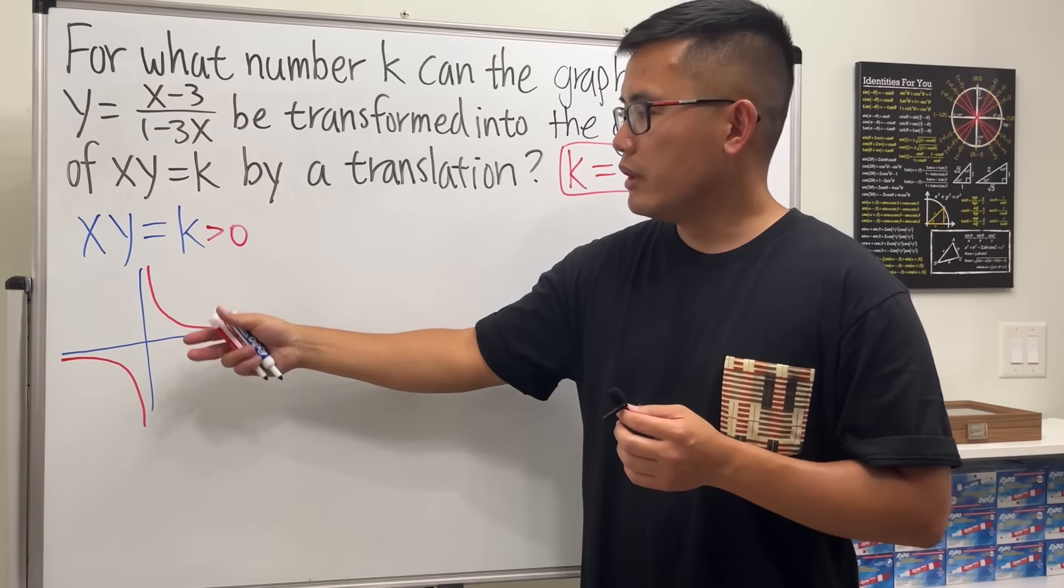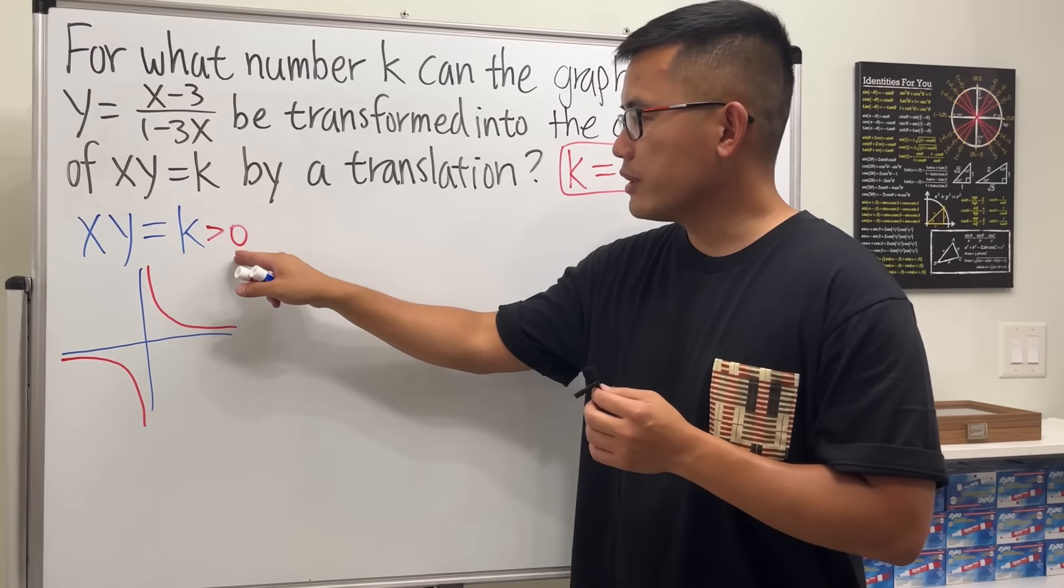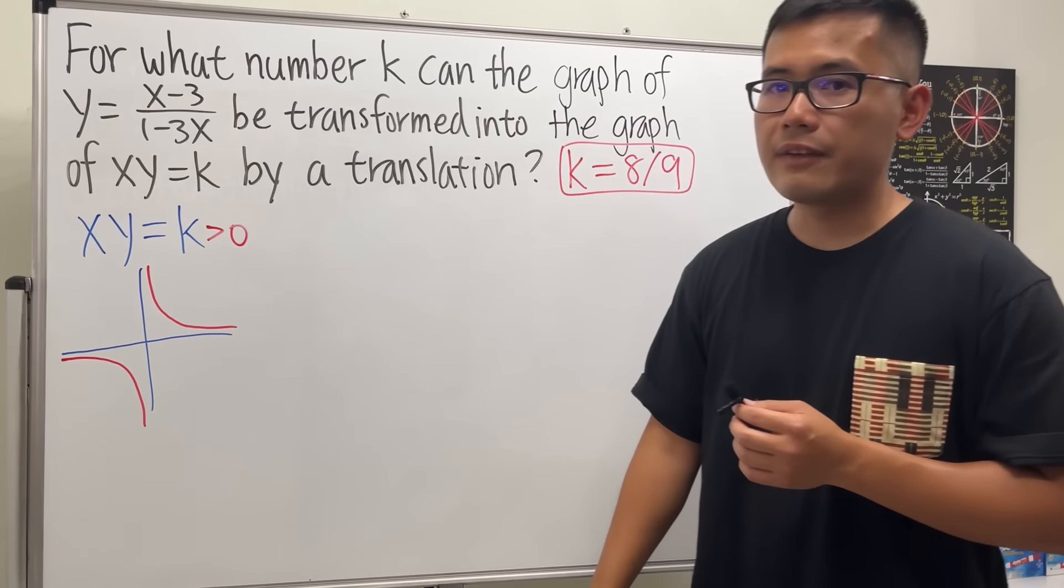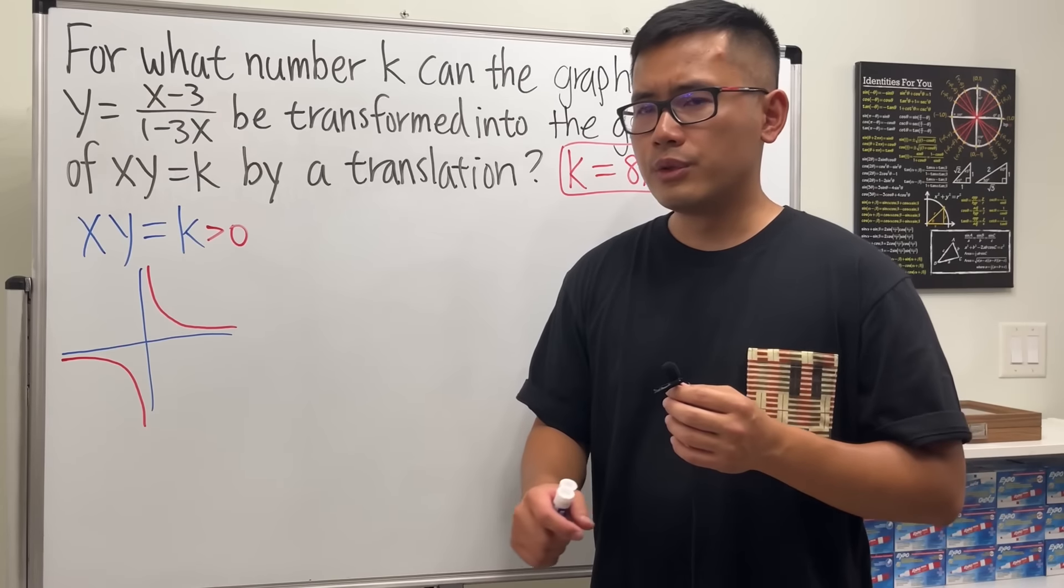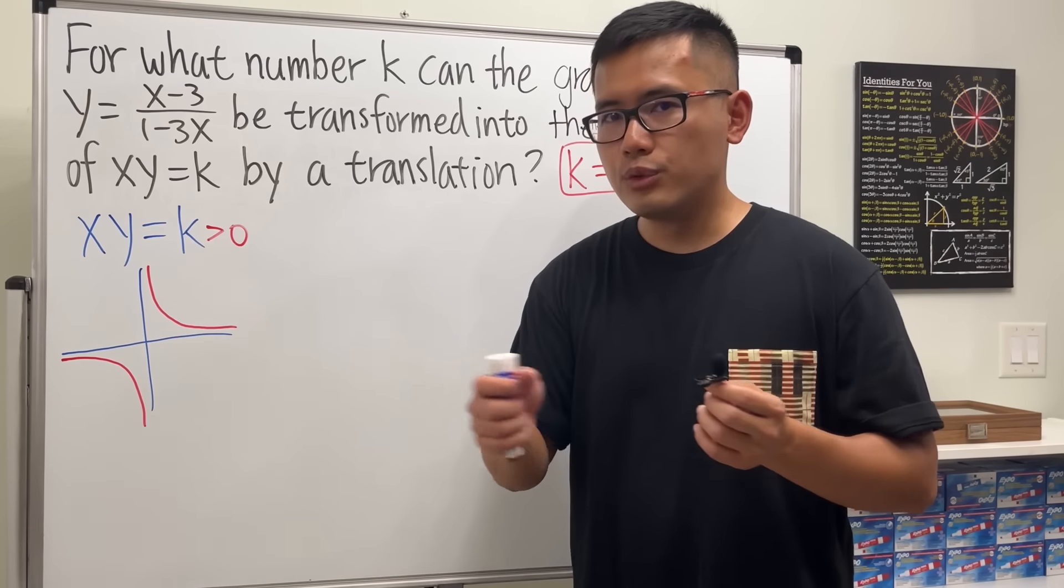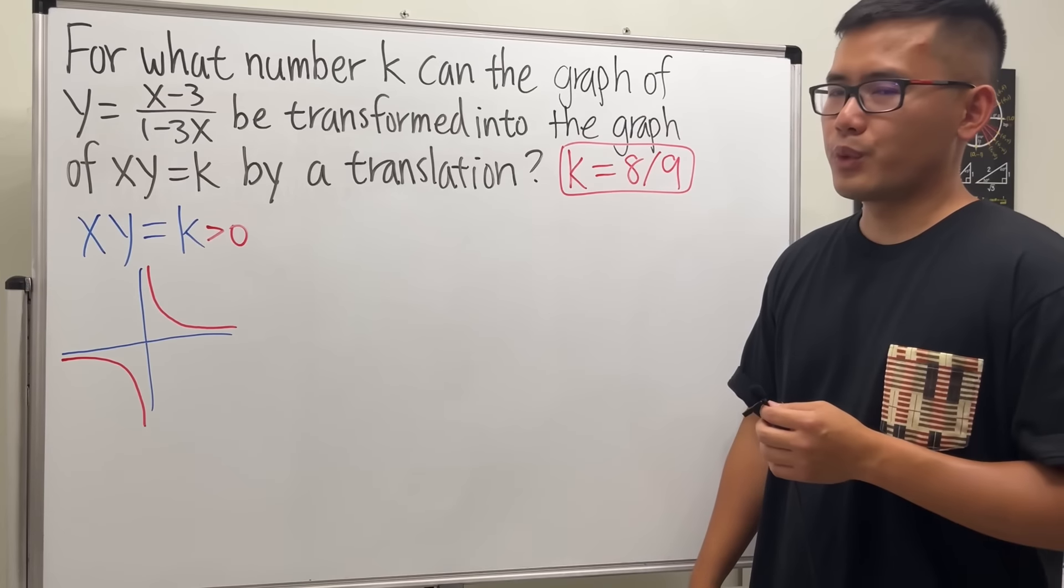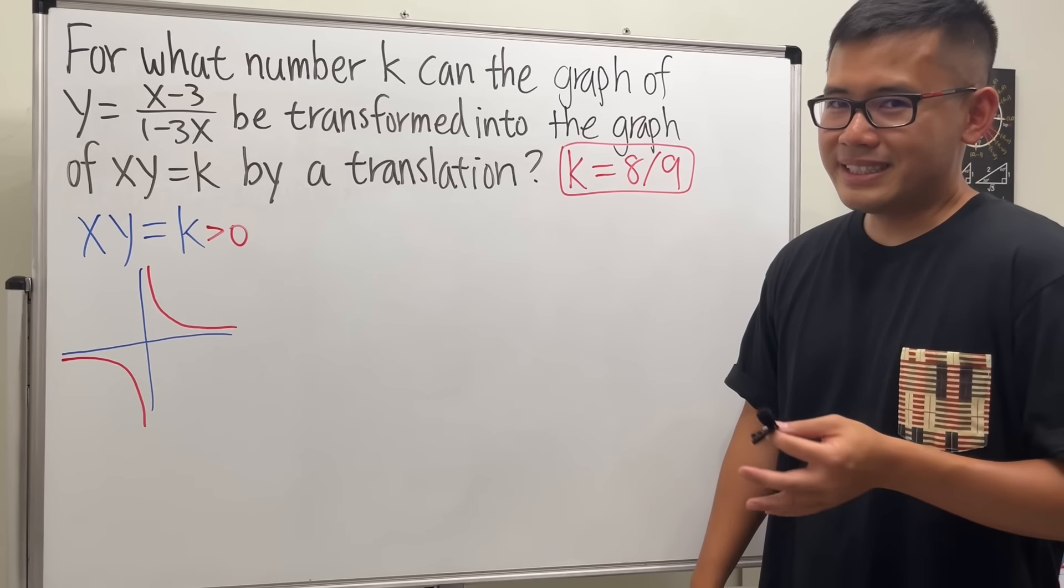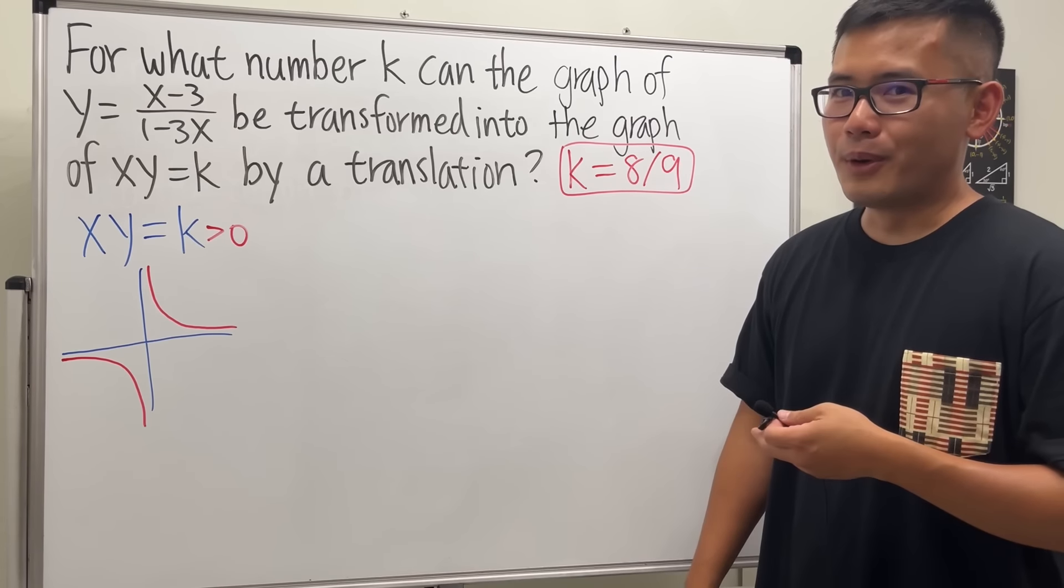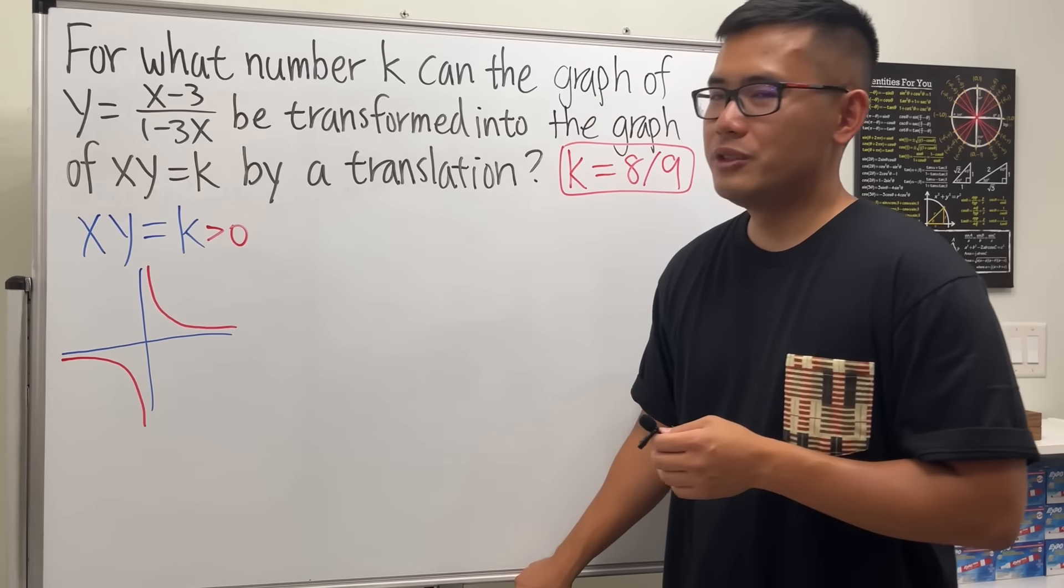But if k is less than 0, then we will just have an upside down graph. So that's why I wanted to say, if k is greater than 0, then this is the graph that we have. And from here, is it possible for us to just take this graph and then do translations and we'll end up with that? So that's pretty much what the question is saying. So hopefully that's more understandable, right? Yeah. Okay, so how exactly can we approach this? It's actually not bad at all.